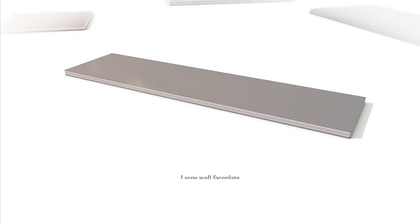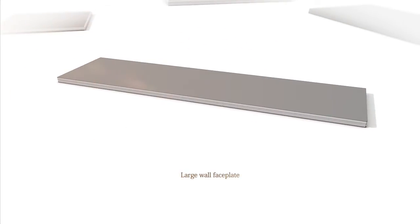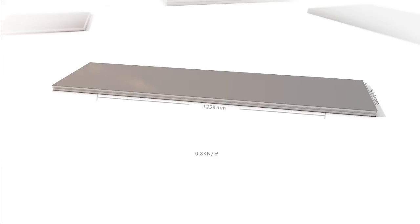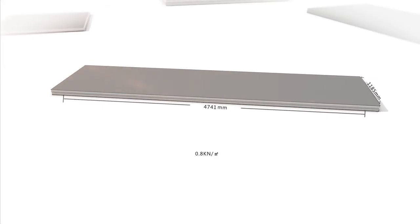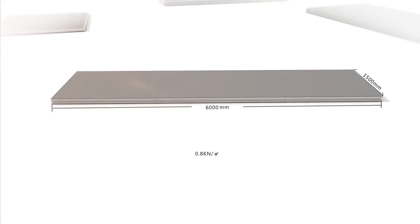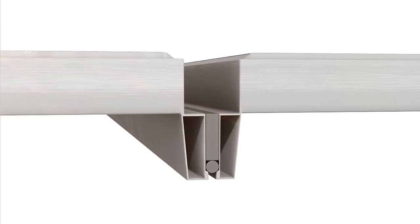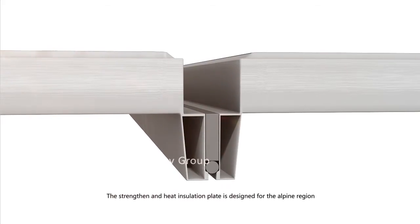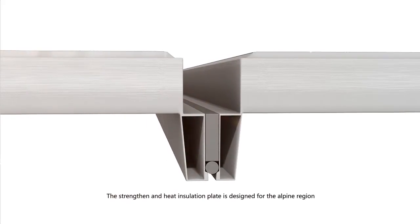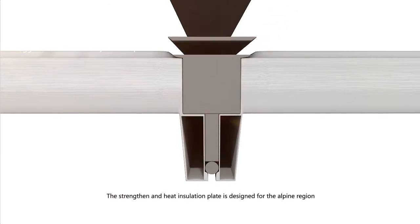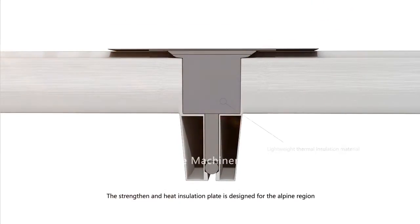Large wall faceplate: standard board is 1.5 by 6 meters, with an allowable load of 0.8 kN per square meter. The strengthened and heat insulation plate is designed for alpine regions, and a thermal bridge prevention process is used at the nodes.